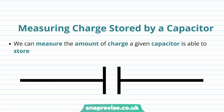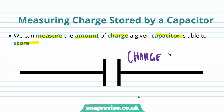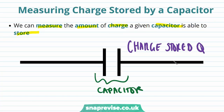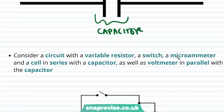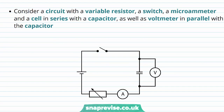It would be useful if we knew the amount of charge that a capacitor can store, and actually we can measure this amount of charge that a given capacitor is able to store. Let's consider a circuit with a variable resistor, a switch, a microammeter, and a cell in series with a capacitor, as well as a voltmeter in parallel with the capacitor.